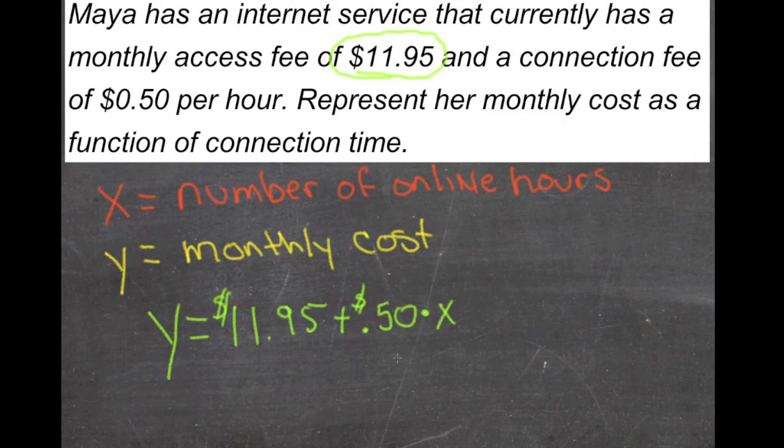So if we convert that just to simple numerical values, we get y equals $11.95 plus $0.50x.